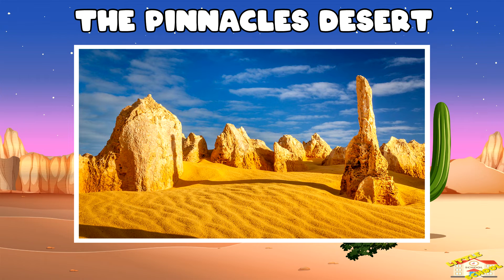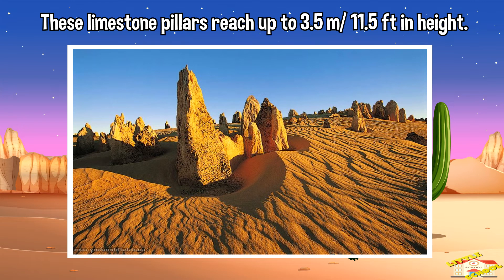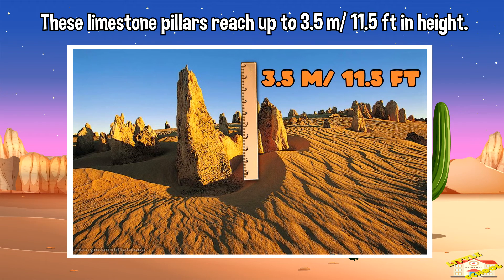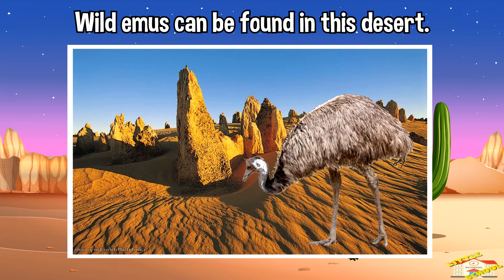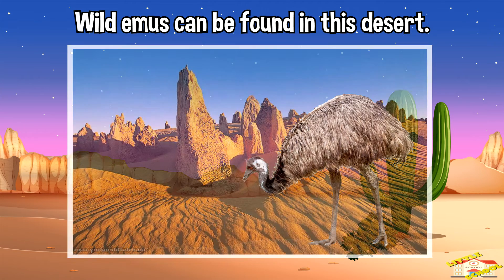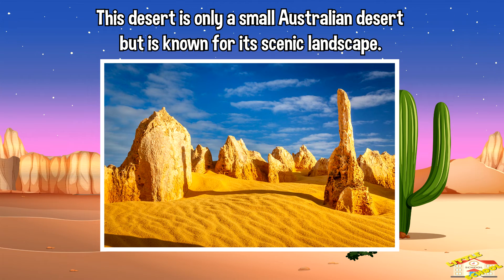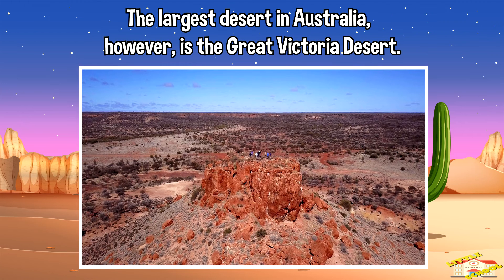The Pinnacles Desert. The Pinnacles in Nambung National Park are limestone pillars, and some reach up to 3.5 meters or 11.5 feet in height. Wild emus can be found in this desert. This is only a small Australian desert, but it's known for its scenic landscape. The largest desert in Australia, however, is the Great Victoria Desert.